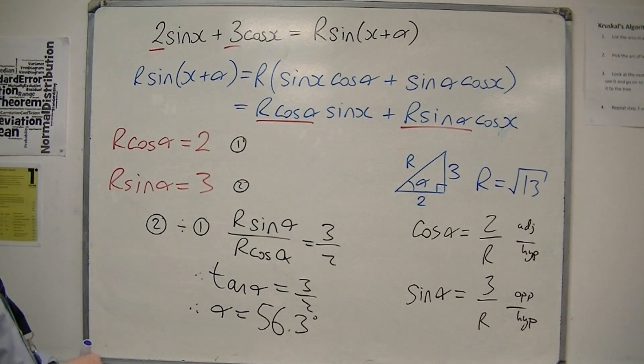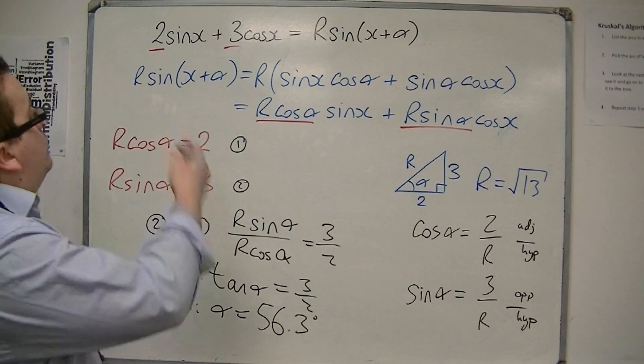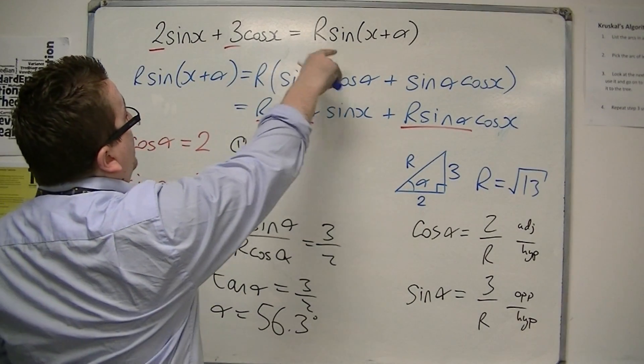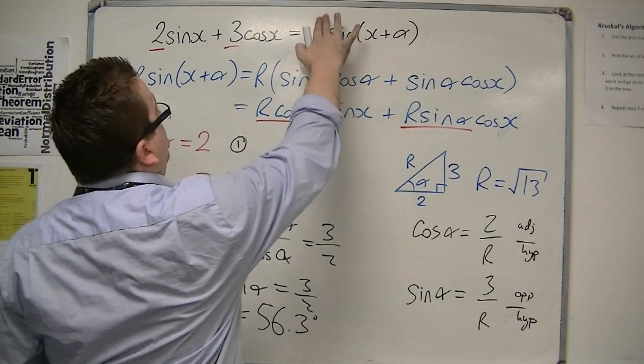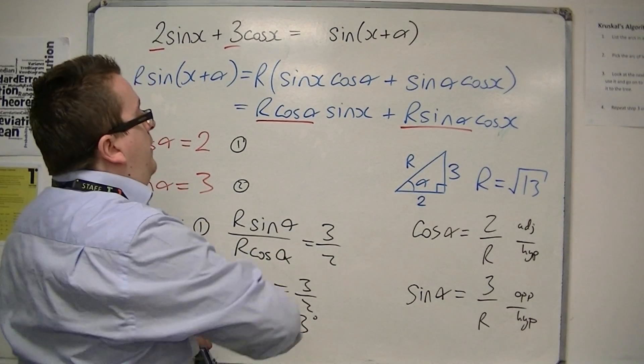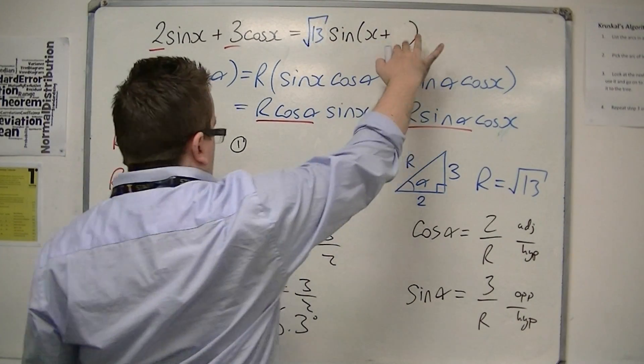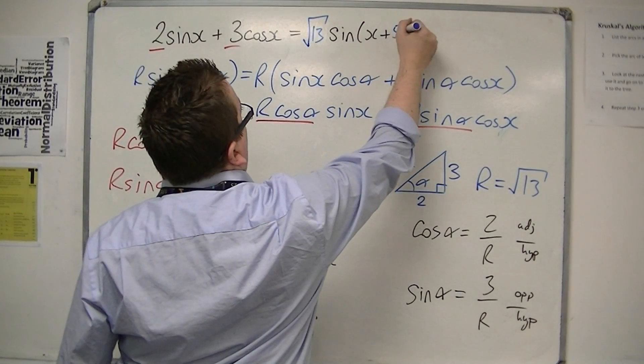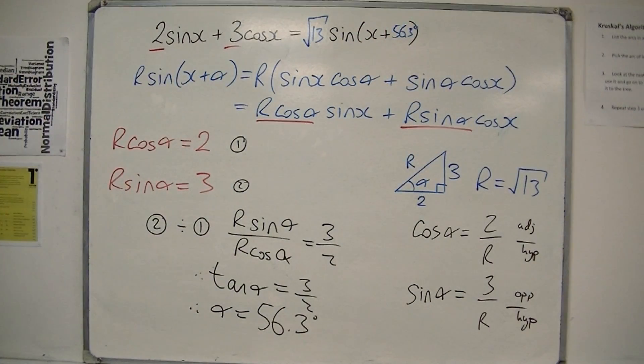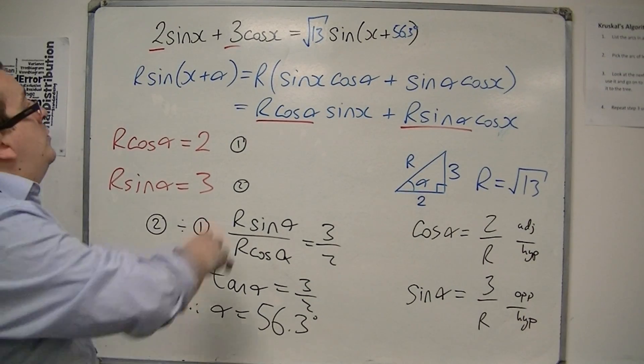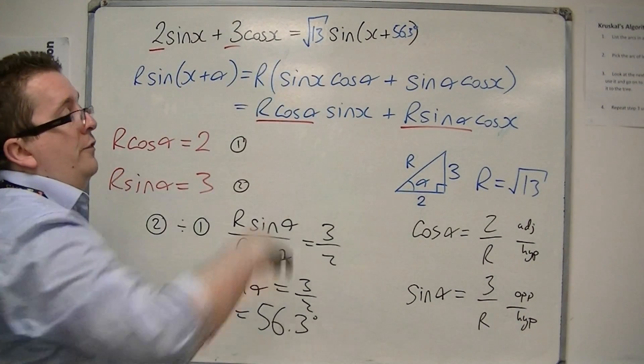So what we've done is we've now got 2 sin x plus 3 cos x is r sin(x + α), where r is square root of 13 and α is 56.3 degrees to 1 decimal place. And that's how we can write this in an equivalent form.